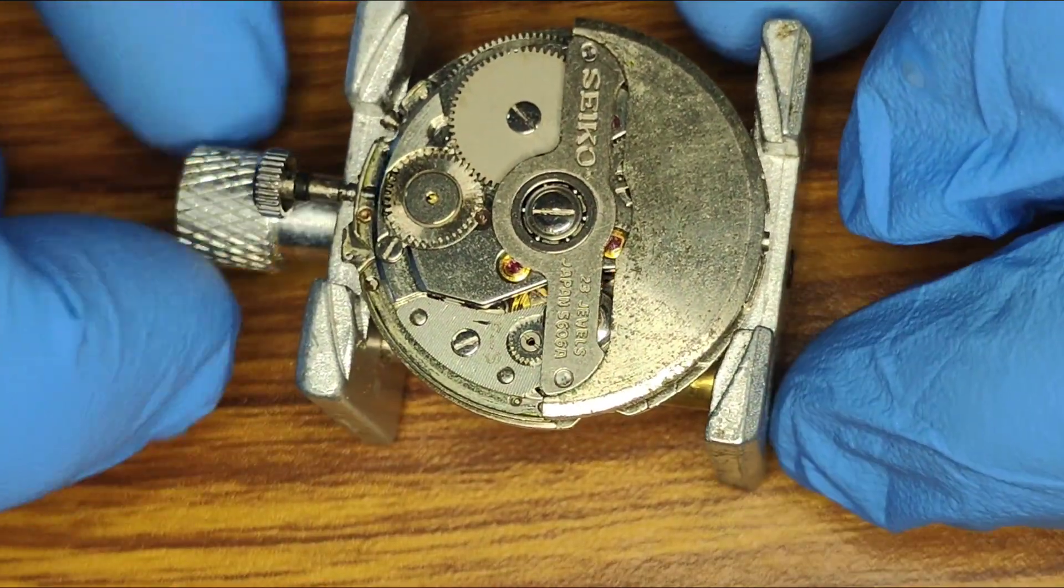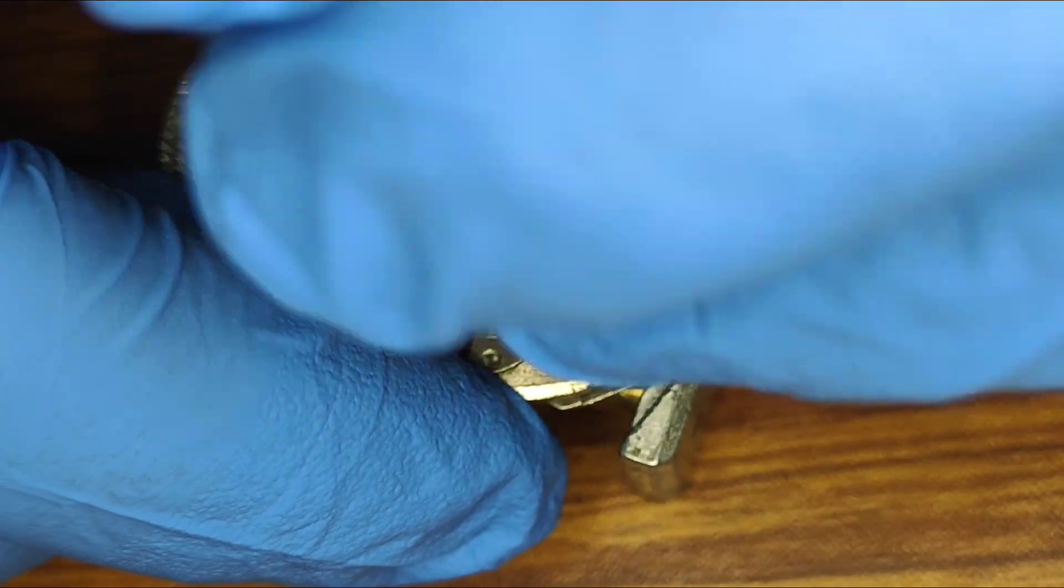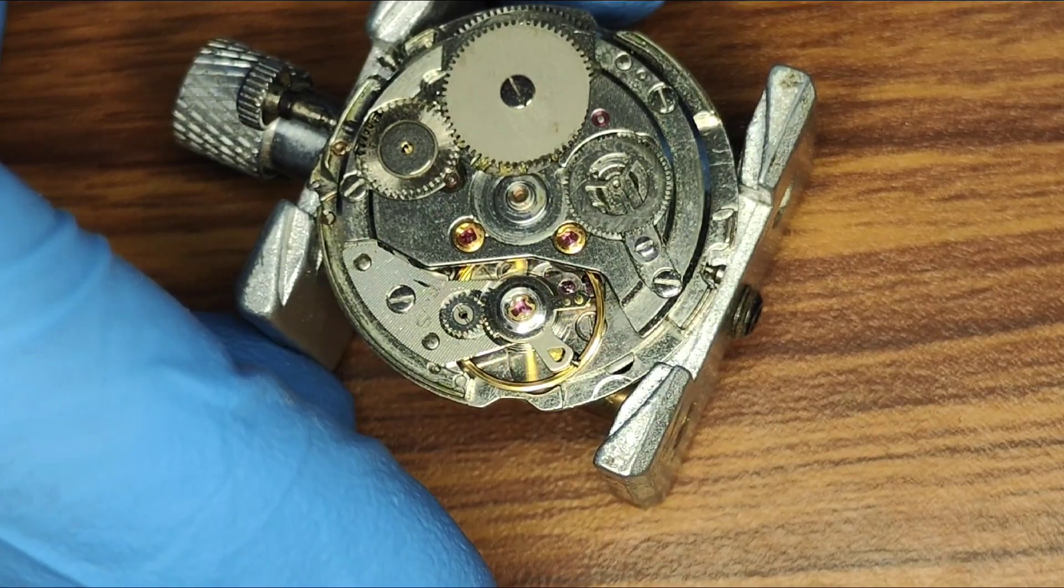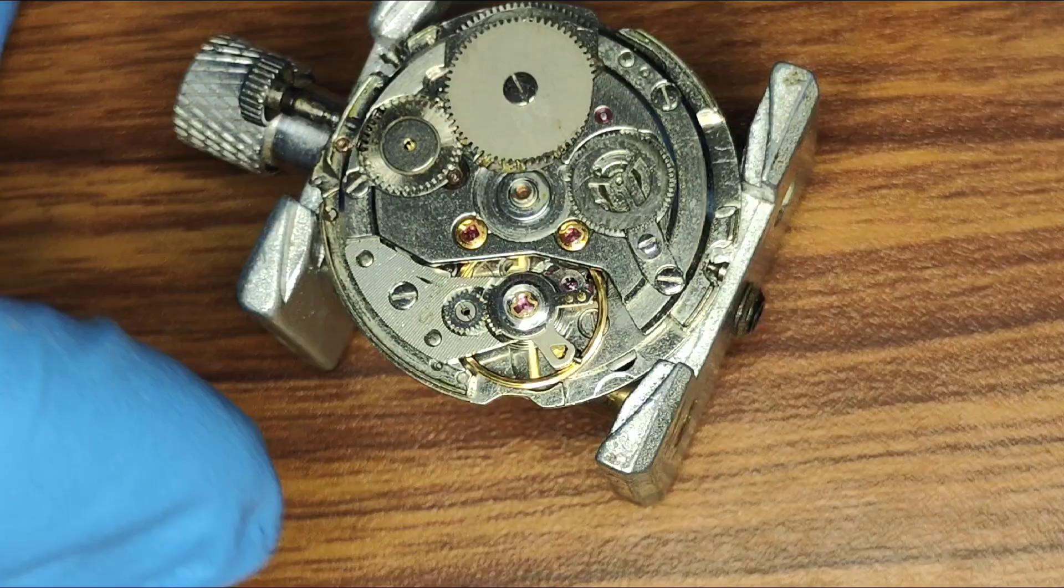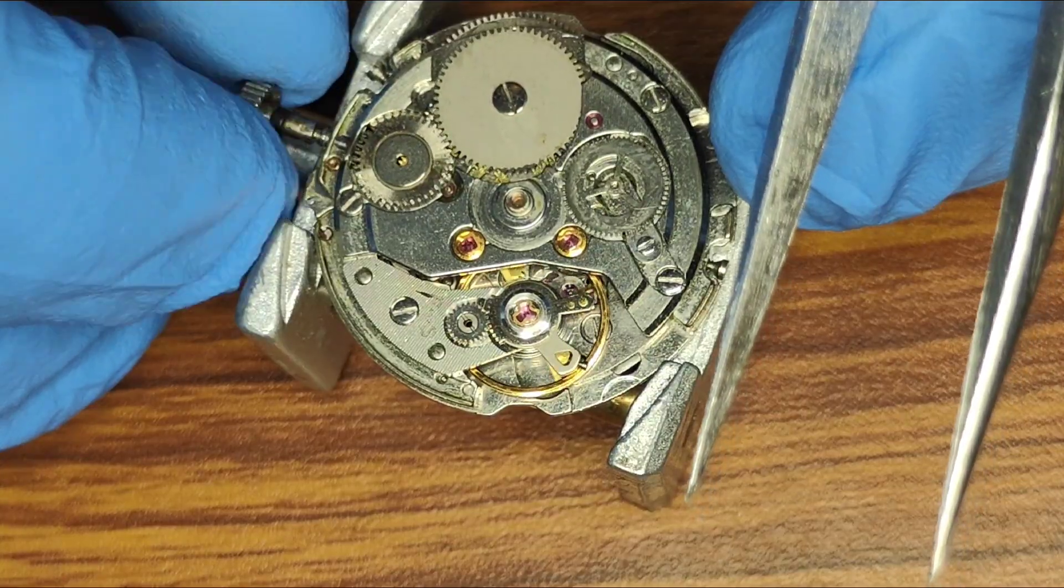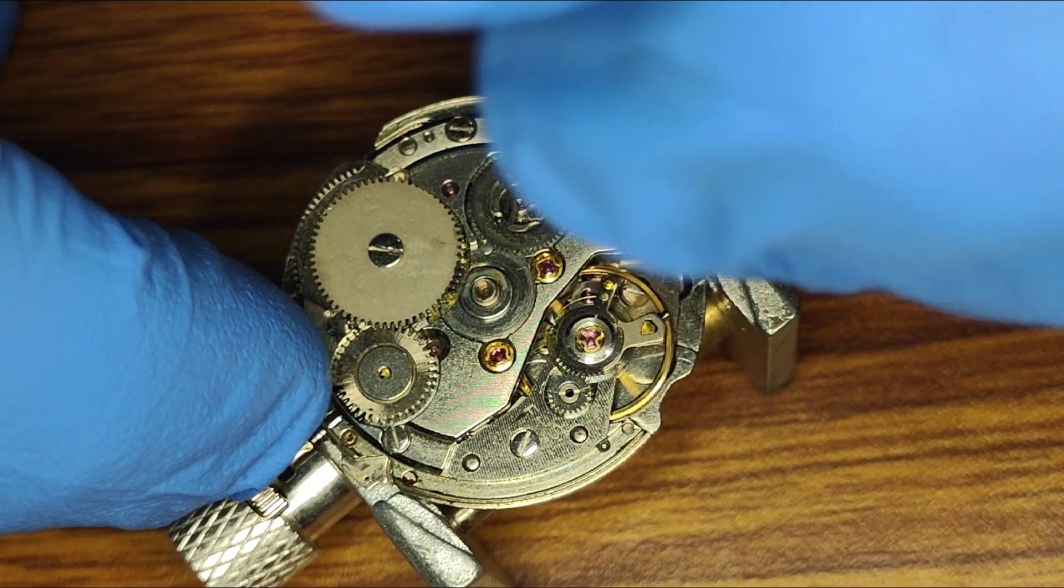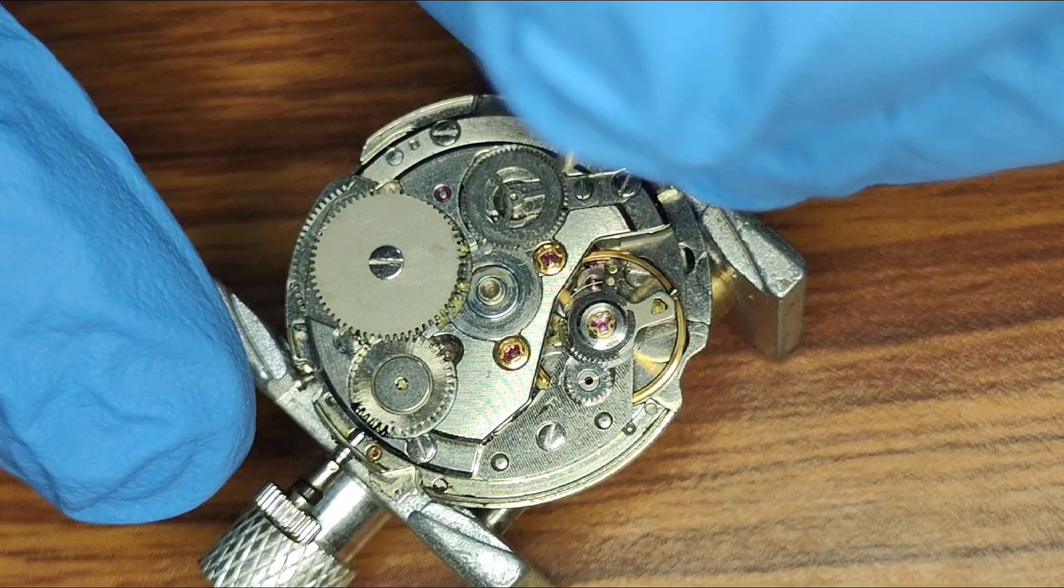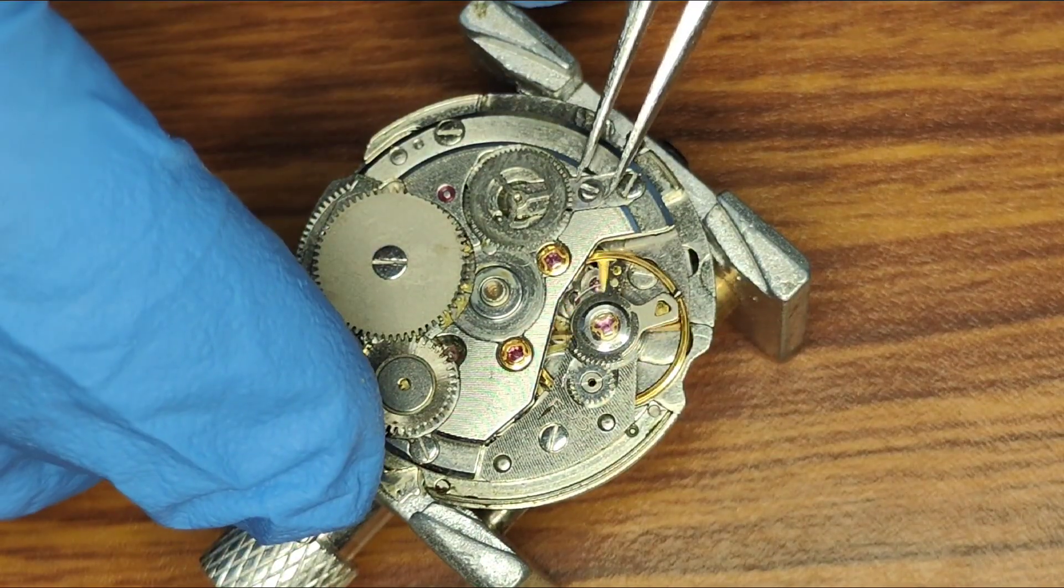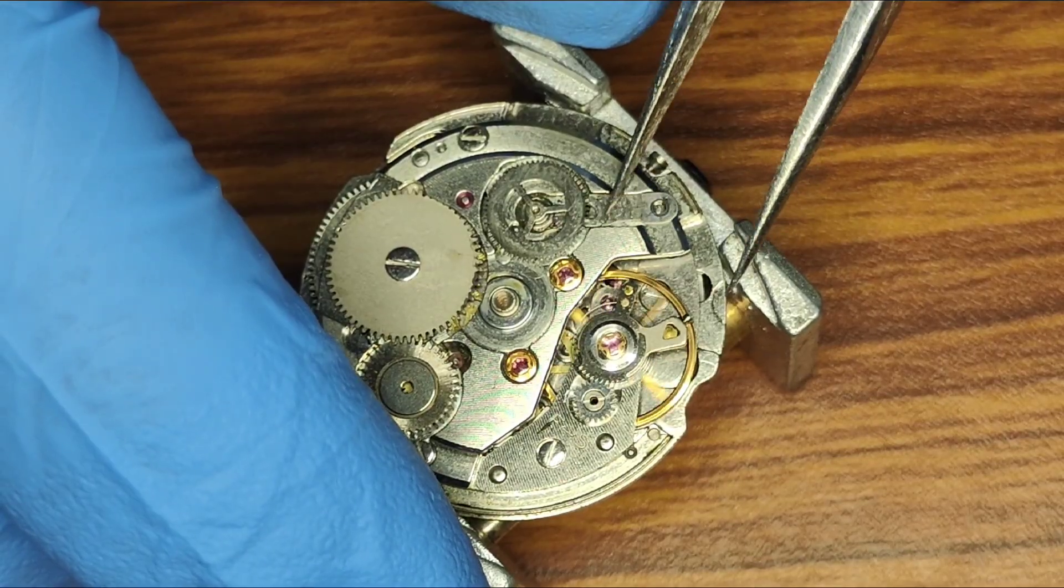We will start the disassembly by taking off the rotor. Then we will take out this part. This part is called reverser idler bolt. I will slide it out.